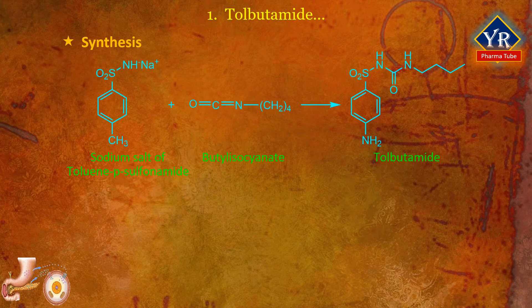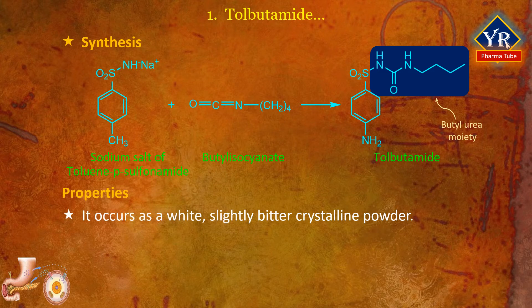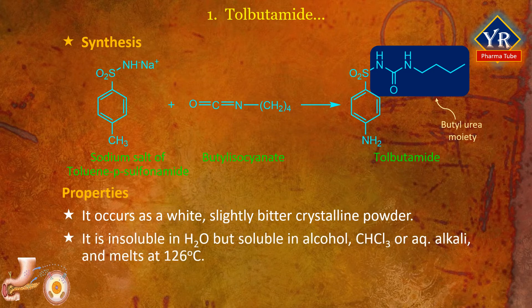Synthesis of tolbutamide. Tolbutamide is prepared in a single step reaction by interaction of the sodium salt of toluene para-sulfonamide with butyl isocyanate. Tolbutamide occurs as a white, slightly bitter taste crystalline powder. It is insoluble in water but soluble in alcohol, chloroform, or aqueous alkali, and melts at 126 degrees centigrade. It is stable in air.